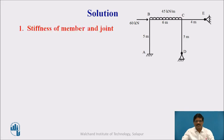Now, let us begin with the analysis. As usual, first of all, we have to calculate the stiffness of the member and joints. We have two interior joints here, B and C, which have distribution factors.